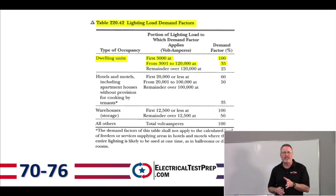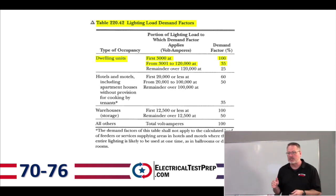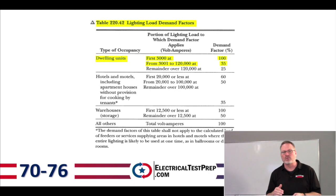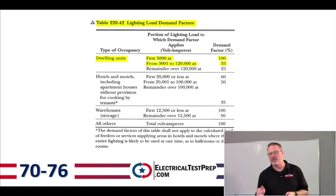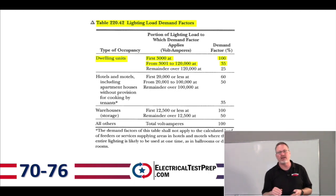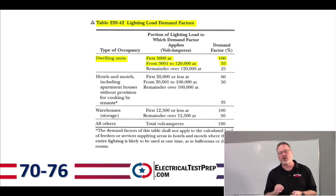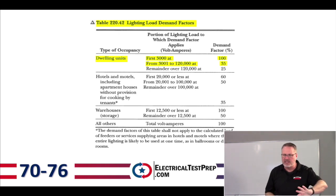For a dwelling unit: the first 3,000 volt-amps is calculated at 100%, and from 3,001 to 120,000 volt-amps, we calculate at 35%. We'll work through problems showing how to apply this. Just know this is the table where we derate the load.